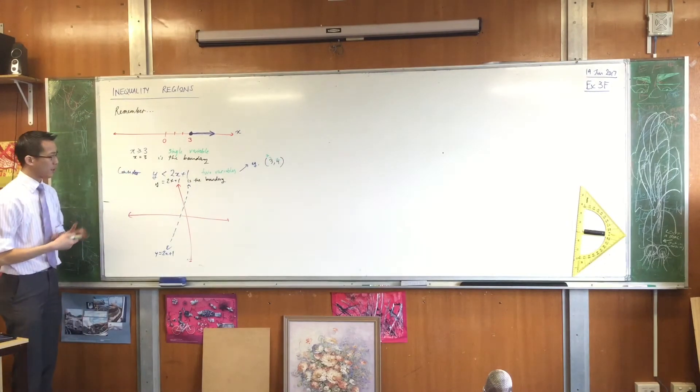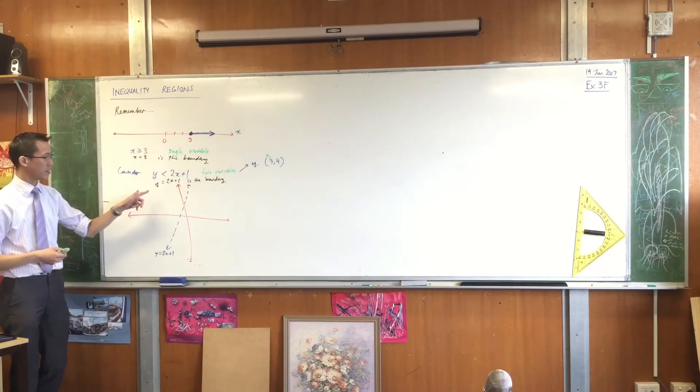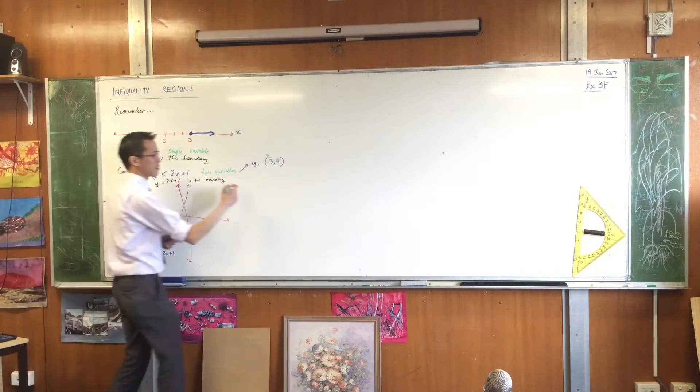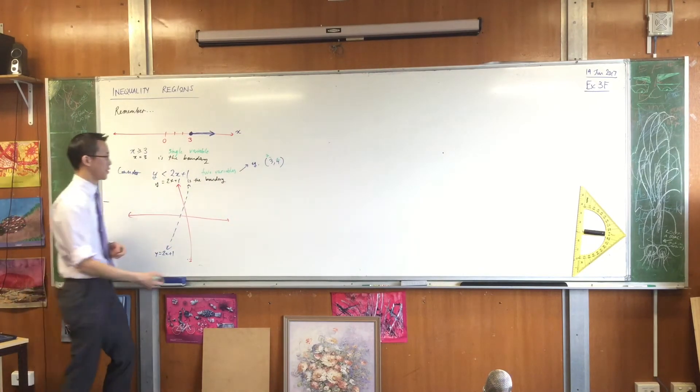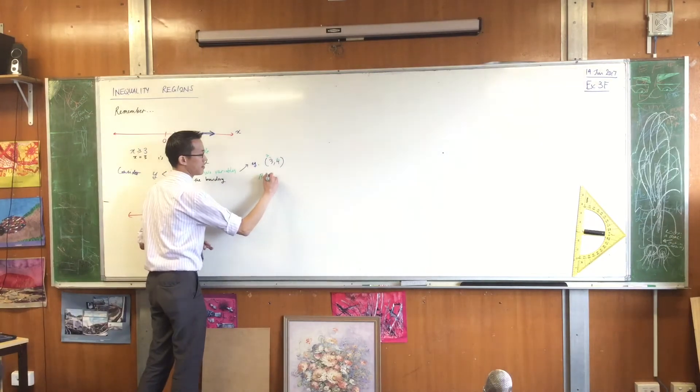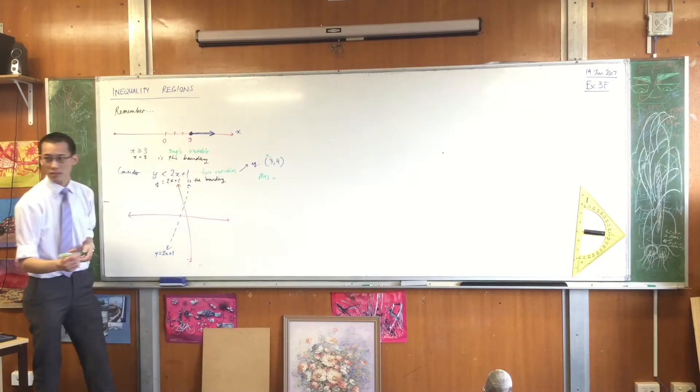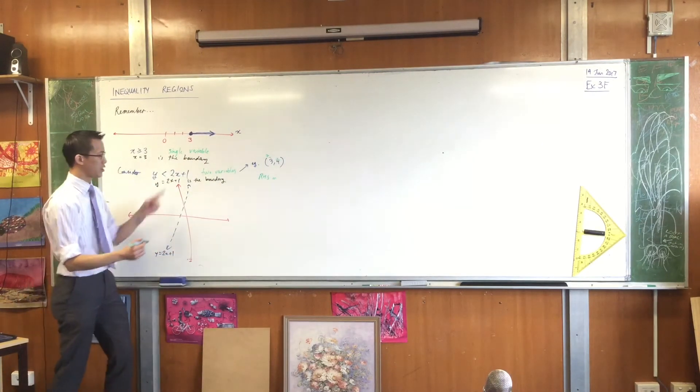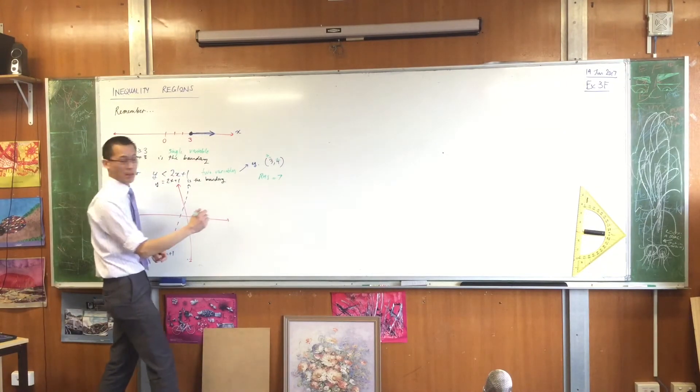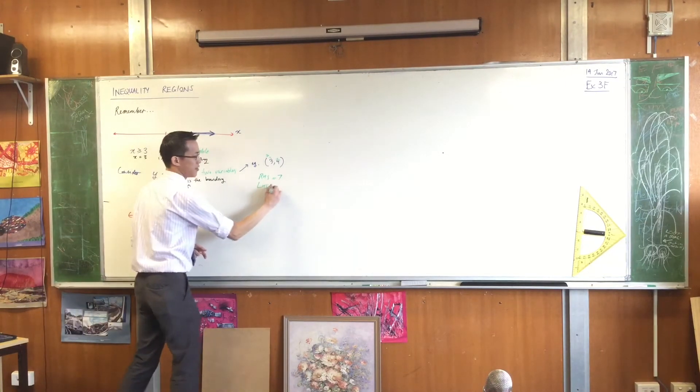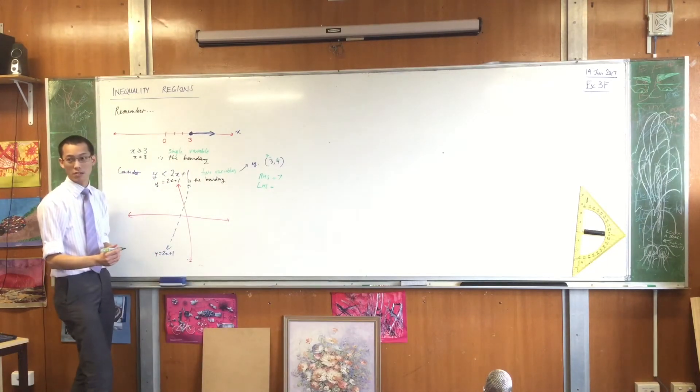So if you have a look at your substituting in, the left-hand side, actually, for reasons that will become clear in a second, I'm going to start with the right-hand side first. The right-hand side is going to be equal to what? It's going to be 2 times 3 plus 1, which is 7. The left-hand side, on the other hand, is going to just be 4.